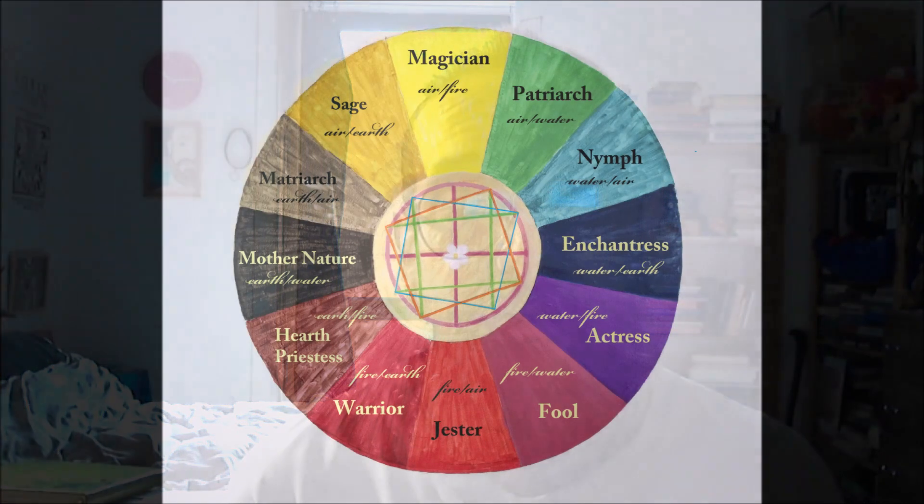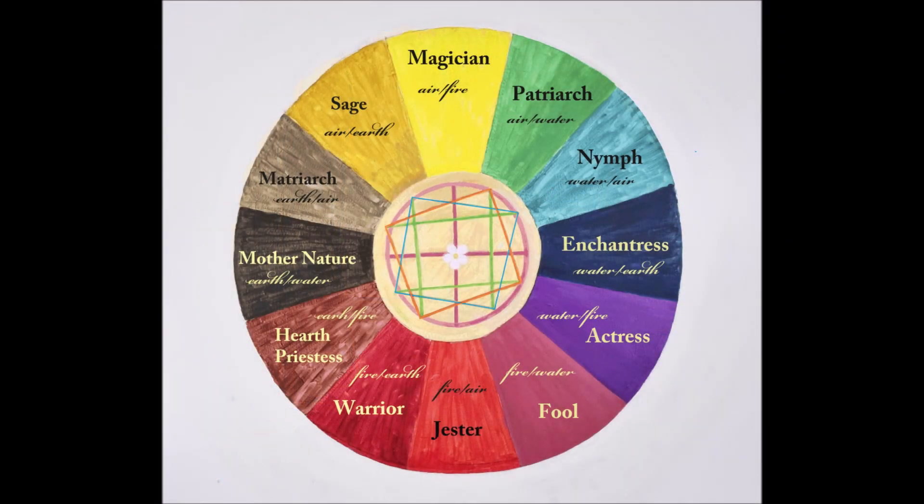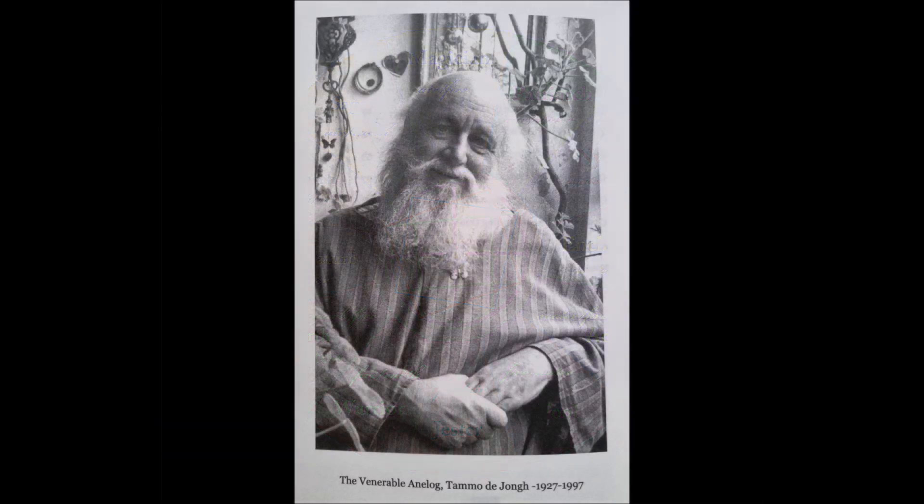Hello there. I just wanted to illustrate some further things with the Wheel of the Elements in this video, and what I wanted to show was how some of our understandings have evolved over the years, at least to my point of view. And just to recap, the Wheel of the Elements we're looking at is a Wheel of Psychological Archetypes, which were discovered by Tamo de Jong and some co-workers of his back in the 1960s.